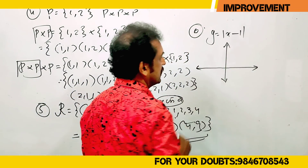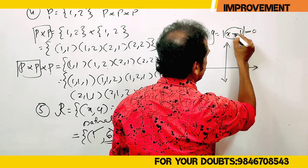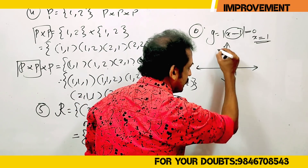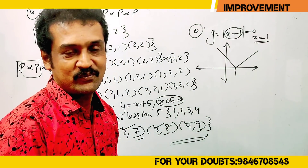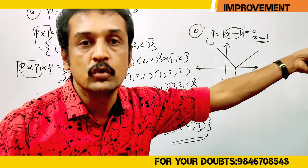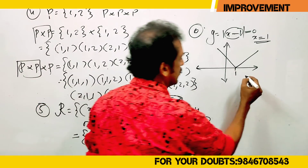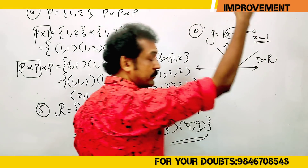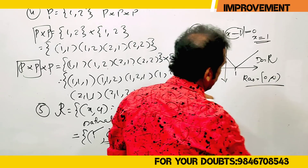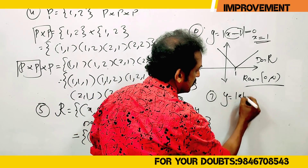X minus 1 equals 0, so X equals 1. The X axis intercept is at 1. The domain is the full real line. The range is 0 to infinity.